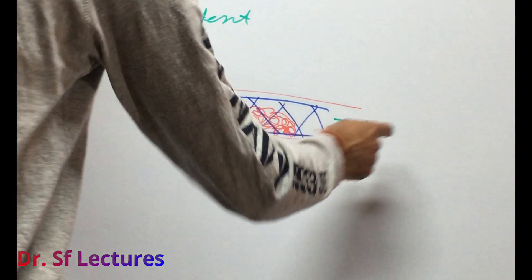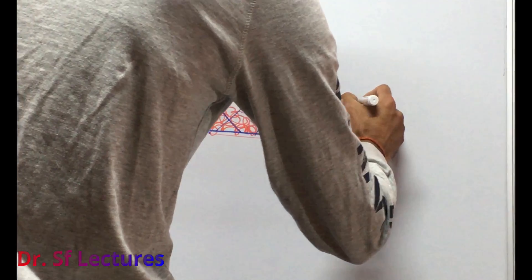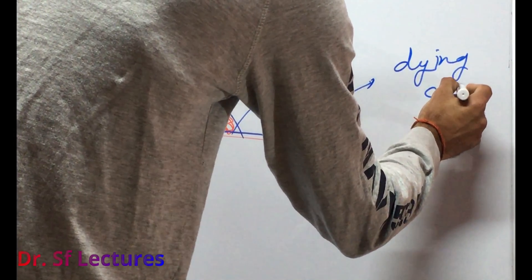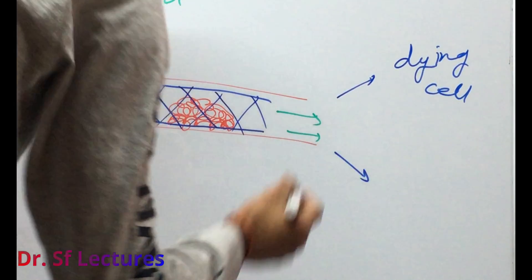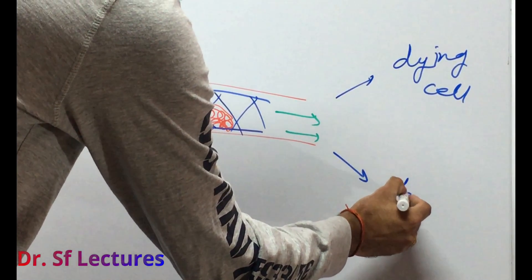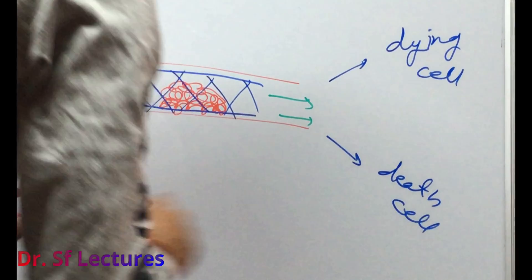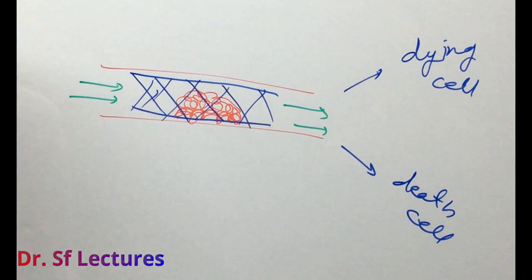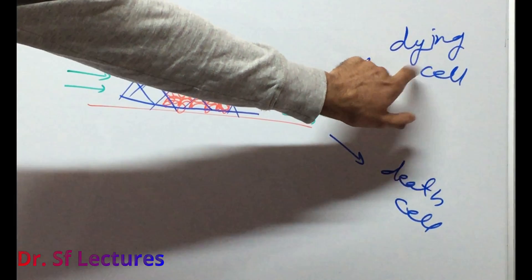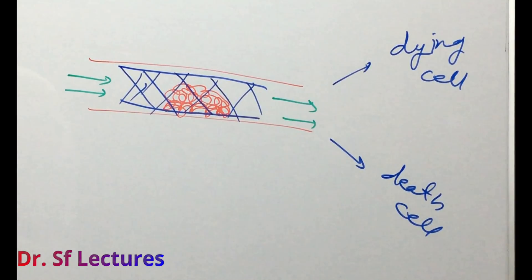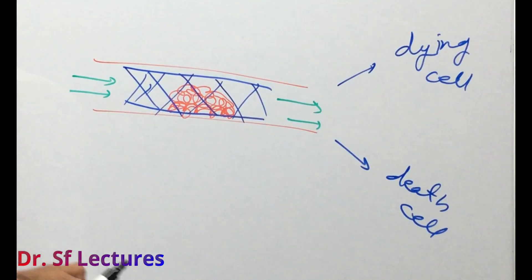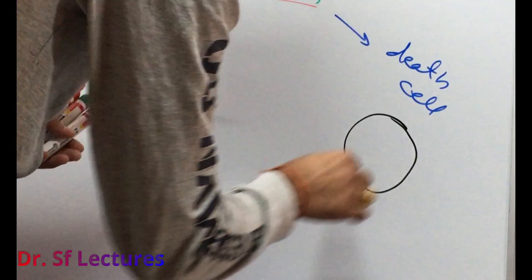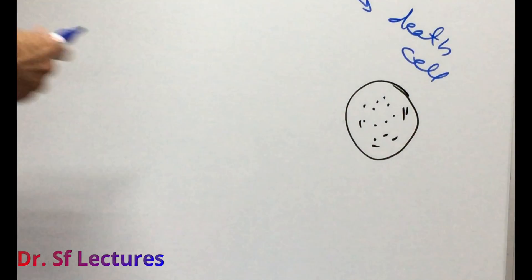There are two types of affected cells: first are dying cells that are going toward death, and second are dead cells in a state of necrosis. To help with oxygen recovery of the dying cells, and in the necrosis area — the death cell area — we will introduce calcium, which leads to contraction of the muscles.